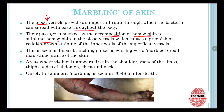Blood vessels contain blood, which is made up of hemoglobin. This hemoglobin starts to decompose into sulfhemoglobin within the blood vessels, which leads to the production of a greenish or reddish-brown staining of the inner walls of superficial vessels.